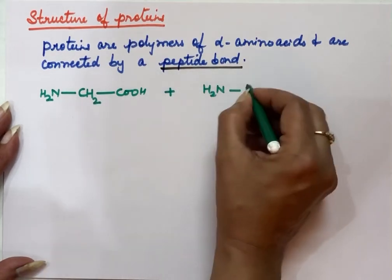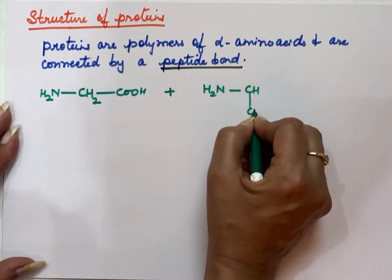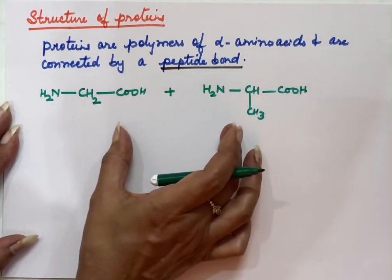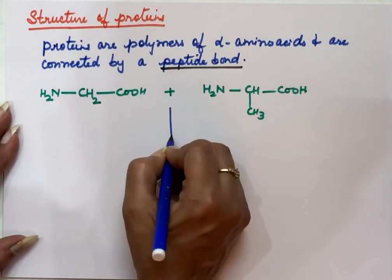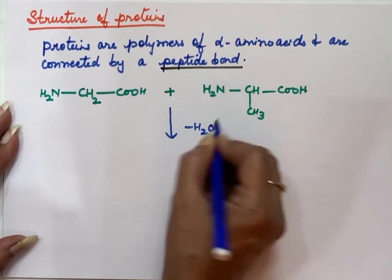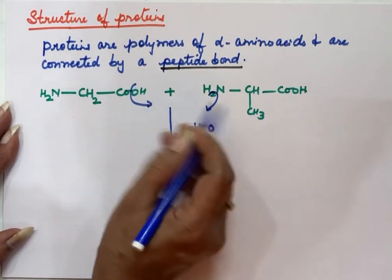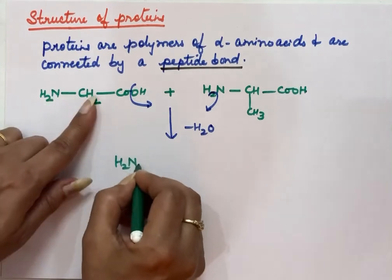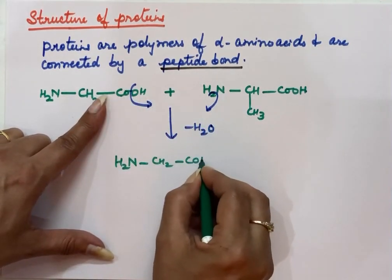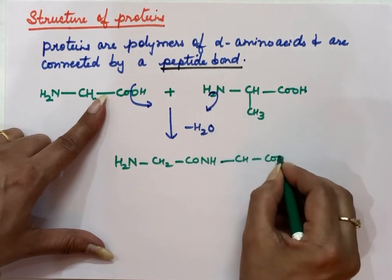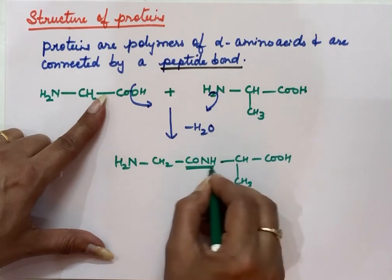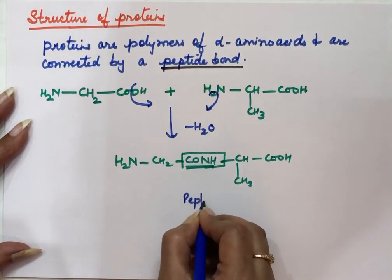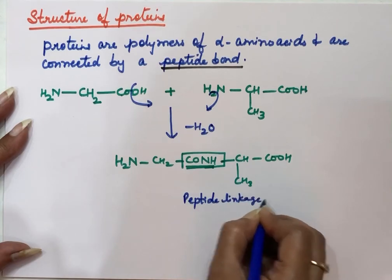When these two amino acids — glycine and alanine — combine with each other, water comes out: H comes from the amino group and OH from the carboxyl group. The resulting structure has H₂N-CH₂ linked by a CO-NH (amide) group to the next residue. This CO-NH linkage combining the two amino acids is called a peptide bond or peptide linkage.